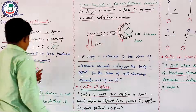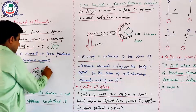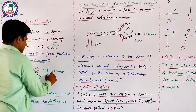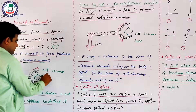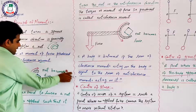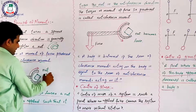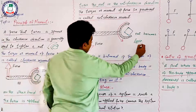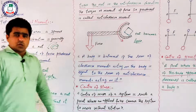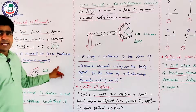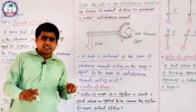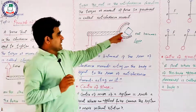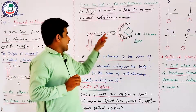MCQs के लिए याद रखें: nut tight करना हो तो spinner को clockwise direction में move करवाएंगे, और nut loose करना हो तो anti-clockwise direction में move करवाएंगे।